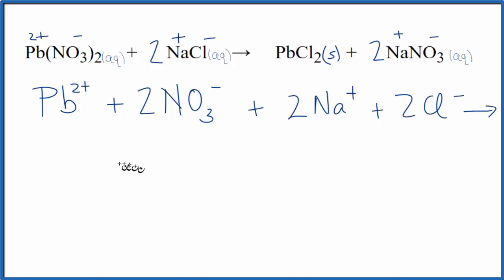The products, we don't split the solid up, so that's just going to be PbCl2 and that's going to be a solid, plus two sodium ions and two nitrate ions. So we have everything split up to its ions.